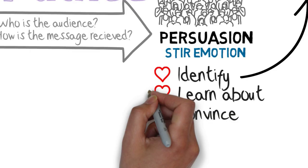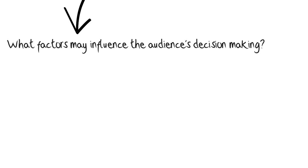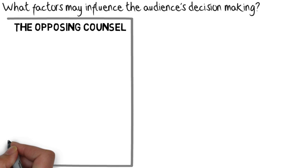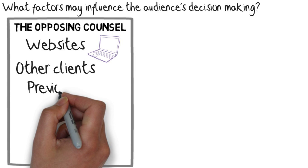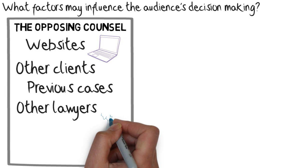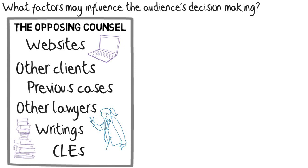So step one is to identify the audience. Then step two is to learn all you can about the audience and the factors that may influence the audience's decision-making. If we start with opposing counsel, how can we learn about opposing counsel? Well, websites can tell us about lawyers — about their background, their credentials. We can learn about other clients they've handled, other cases they've worked on. We can talk with lawyers who've been in cases or deals with opposing counsel. Or have they written anything that could give you insights into how they think? Have they spoken at CLEs?